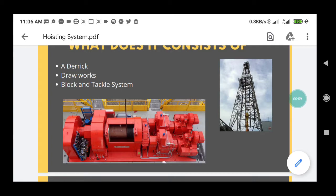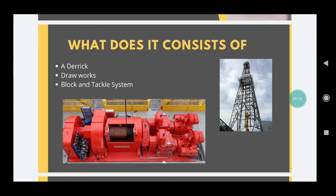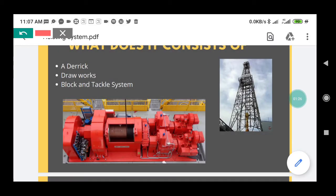The draw works provides the hoisting and braking power to lower and lift the heavy load of drill string and casing into and out of the wellbore. You must have flown kites in childhood and used a charkhi to control the kite's speed and height — you can think of draw works similarly to that charkhi. This structure rolls and allows the drilling line to get over the tubulars in order to lower them into the wellbore, and it also has a braking system so we can stop the lowering of the tubulars when needed.